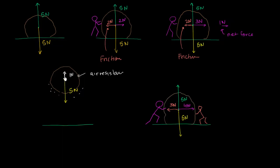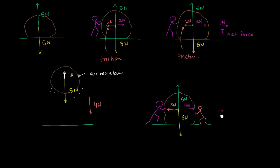In the fourth scenario, forces only act in the vertical direction. You have gravity at 5 Newtons downwards and air resistance at 1 Newton upward, but they don't completely balance out — you still have a net force of 4 Newtons downwards, so this is an unbalanced situation. Finally, in the last scenario the vertical forces are balanced, but in the horizontal direction 4 Newtons to the right exceeds the 3 Newtons to the left (friction plus the other person), giving a net force of 1 Newton to the right. This is again a scenario with unbalanced forces.